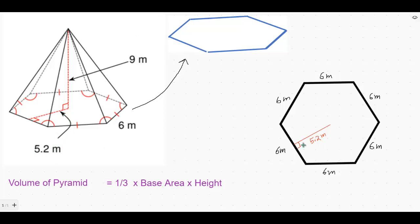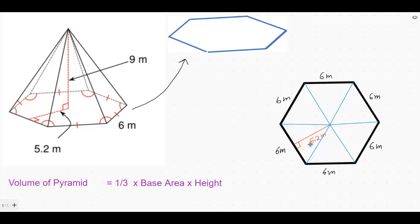To find the area of this hexagon, we will divide it into triangles. As this is a regular hexagon, the area of all the triangles is equal. There are 6 triangles. First, we will find the area of one of those triangles. The area of a triangle is one-half times base times height.